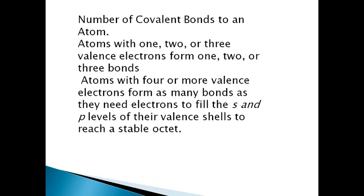First, we will see the number of covalent bonds to an atom. Atoms with one, two, or three valence electrons form one, two, or three bonds respectively. Atoms with four or more valence electrons form as many bonds as they need electrons to fill the s and p levels of their valence shell.